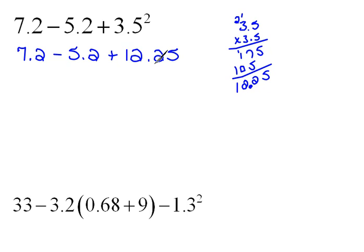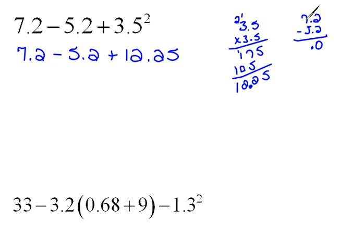Now we can continue on. We have subtraction and addition — those are basically the same operation, so we just move left to right. We do 7.2 minus 5.2 first. Remember, decimals have to stay lined up. 2 minus 2 is 0, 7 minus 5 is 2, so that gives us 2.0.